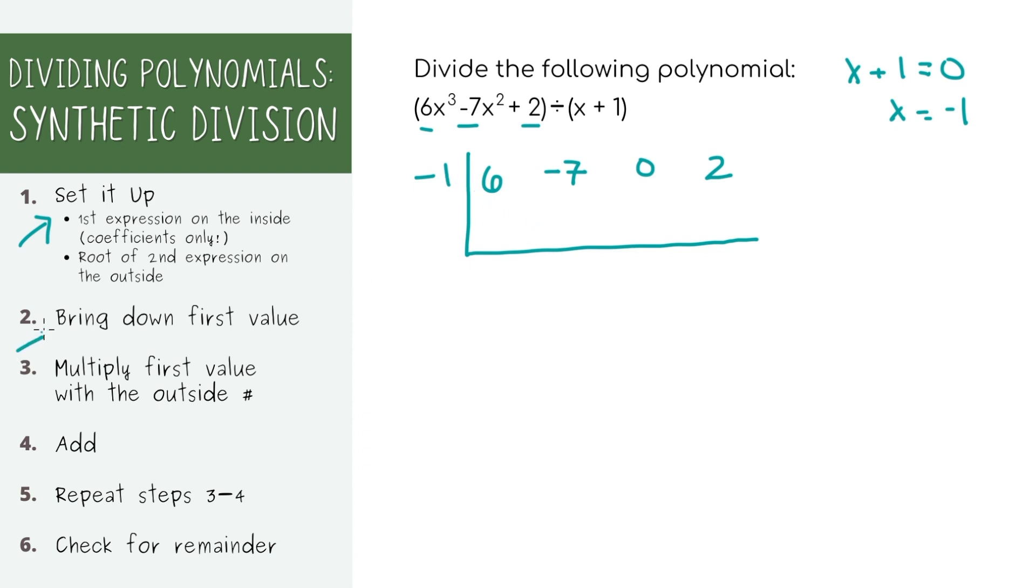Now we're going to bring down the first number. Let's multiply it with a number on the outside and you'll get negative six. We'll put that underneath the second term. Now let's add. Just note that this is a little different than long division where you're subtracting. And you just keep repeating steps three and four until you get to the very last number. I'll do one more just as an example. So negative 13 times negative one equals 13. Then zero plus 13 equals 13. And repeat.